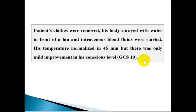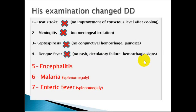Heat stroke, which presents with dry hot skin, is now excluded because the conscious level did not recover after cooling. Meningitis is excluded as there is no meningeal irritation. Leptospirosis is excluded as there is no conjunctival hemorrhage or jaundice. Dengue fever is excluded as there is no rash, bleeding tendency, or circulatory failure. Remaining possibilities are encephalitis, cerebral malaria (given splenomegaly), and enteric fever (also with splenomegaly).